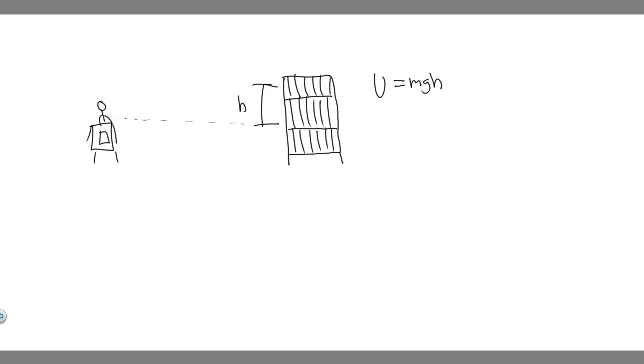We know that the book-Earth system is going to increase by 9.08 joules. The potential energy is going to go from zero to some value, or from one value to another. So the change in potential energy is equal to 9.08 joules, and it's going to equal MGH.